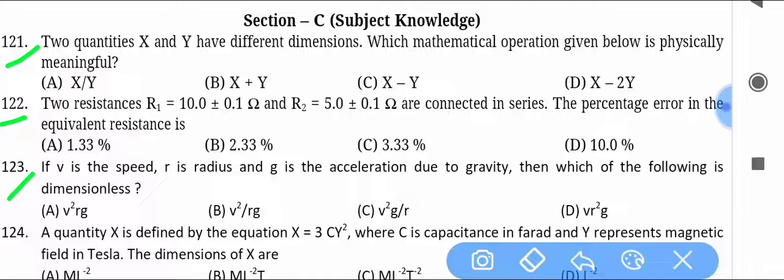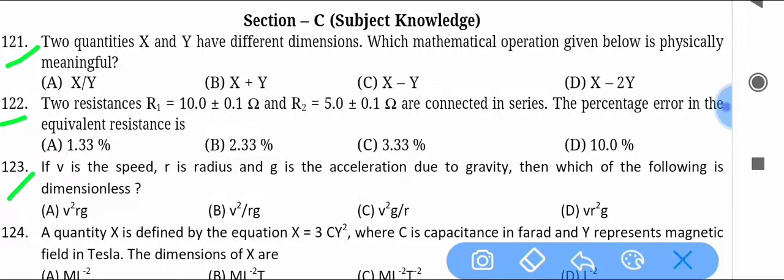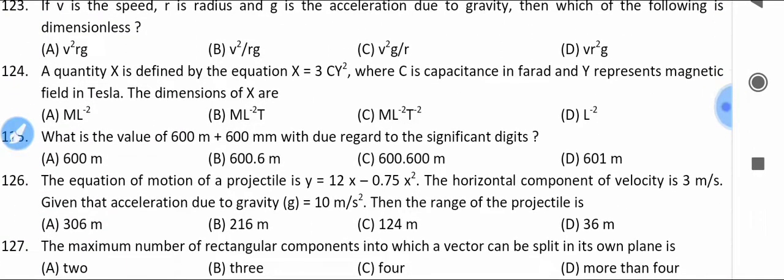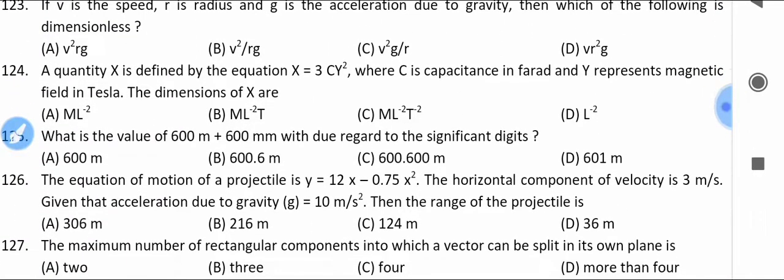If v is the speed, r is the radius, and g is the acceleration due to gravity, then which of the following is dimensionless? You have to find the correct answer from the given options.